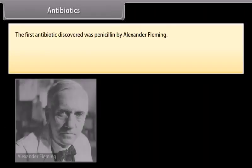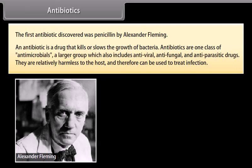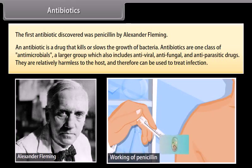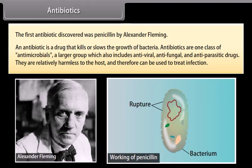Antibiotics. The first antibiotic discovered was penicillin, by Alexander Fleming. An antibiotic is a drug that kills or slows down the growth of bacteria. Antibiotics are one class of antimicrobials, a larger group which also includes antiviral, antifungal, and antiparasitic drugs. They are relatively harmless to the host and therefore can be used to treat infection. Penicillin works by preventing the production of peptidoglycan, which forms the cell wall. The cell continues to grow without dividing, so the wall gets weaker and eventually ruptures.